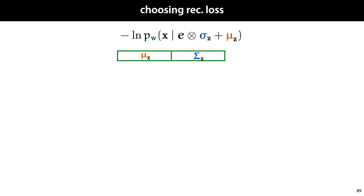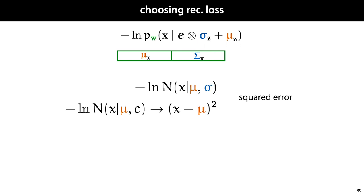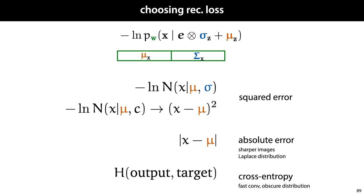One final step is to choose the reconstruction loss. What form this takes depends entirely on the output distribution of our generator network. If our generator network produces a multivariate normal distribution, then we're essentially minimizing squared errors. Minimization of absolute errors corresponds to a Laplace distribution, which in image settings often leads to slightly sharper images. We can also apply the cross entropy between the network output and the target output — this corresponds to a quite obscure distribution but can be justified, and if we're generating images this is often the way to guarantee fast convergence.